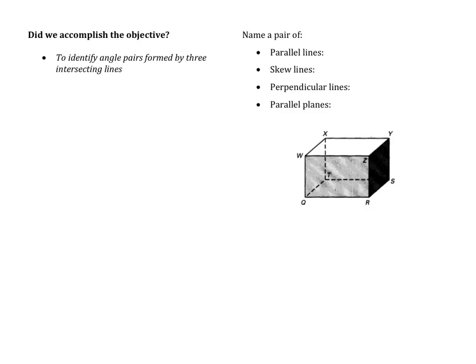Flip to the last page. Our objective for this video was to identify angle pairs formed by three intersecting lines — two lines and the transversal. We learned about corresponding angles, alternate interior, alternate exterior, and consecutive interior. We also covered parallel lines, skew lines, perpendicular lines, and parallel planes. For your last problem, give me an example of each of those four terms using the box. Please make sure you use proper notation. When you come to class tomorrow, I'm going to be making sure you have this problem completed. Good luck!